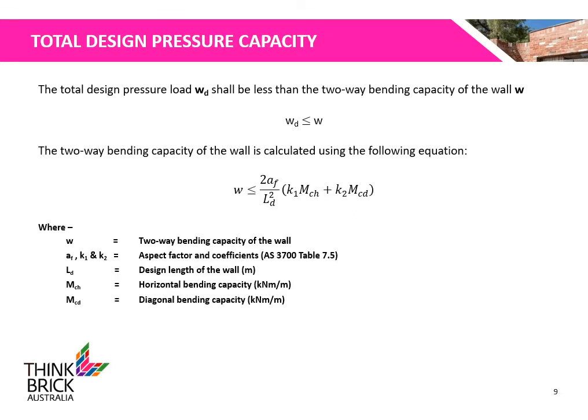The total design pressure shall be less than the two-way bending capacity of the wall. The two-way bending capacity is calculated using the equation below, where W is the two-way bending capacity, AF is the aspect factor, K1 and K2 are the coefficients, LD is the design length of the wall, MCH is the horizontal bending capacity, and MCD is the diagonal bending capacity.